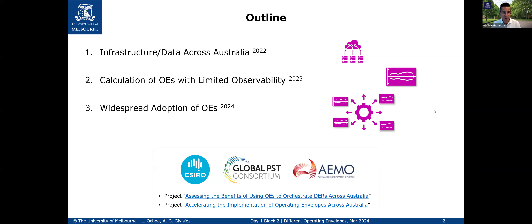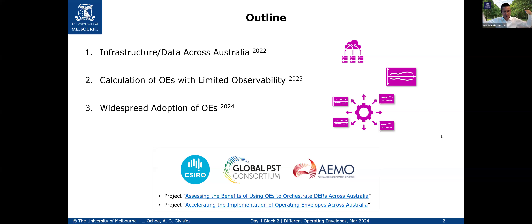Everything I presented in block one was related to the low-voltage transformer and corresponding customers or the SWER network. In reality, if multiple neighborhoods are using operating envelopes, they affect everyone because they're connected to the same electrical network — assuming they're part of the same high-voltage, medium-voltage feeder. Those effects of people using operating envelopes will affect the voltages of others. So calculations are not limited to the low-voltage; they have to consider the high-voltage — 22 kV, also called medium voltage internationally.